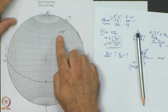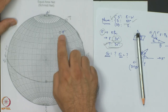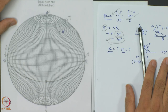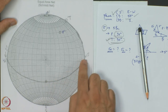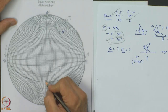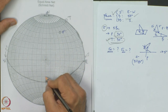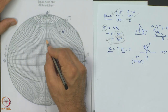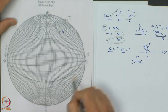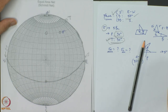Now, how much is the normal stress and the shear stress component on this plane, supposing this stress is acting on it? Our first job is to find the pole of this plane. The dip direction points south. From that point, I move inside 90 degrees: 10, 20, 30, 40, 50, 60, 70, 80, and 90. This point is the pole of this great circle or this plane — I call it P.